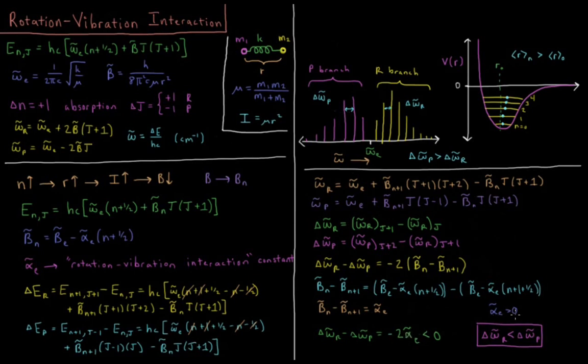Alpha e is a constant which is greater than or equal to 0, so that means that minus 2 alpha e is less than 0. And if delta omega r minus delta omega p is less than 0, that means that delta omega r, the difference in spacing in the R branch, is less than delta omega p, the difference in spacing in the P branch. So notice here, according to our model, the difference in this spacing is entirely proportional, directly proportional, to alpha e, the rotation-vibration-interaction constant.